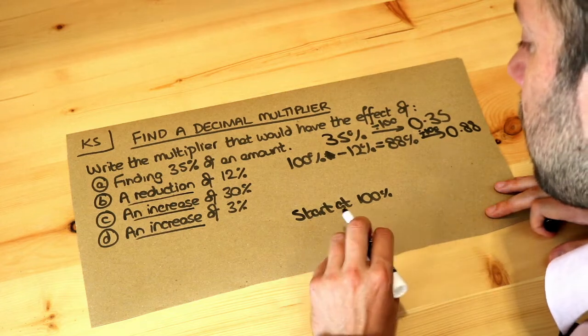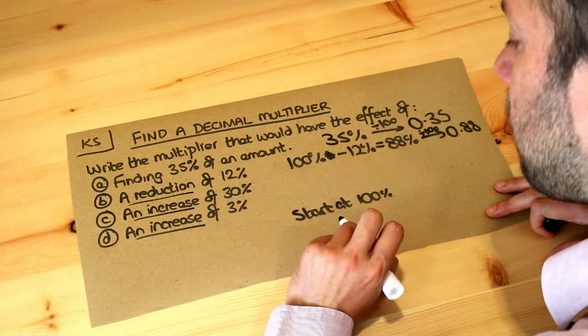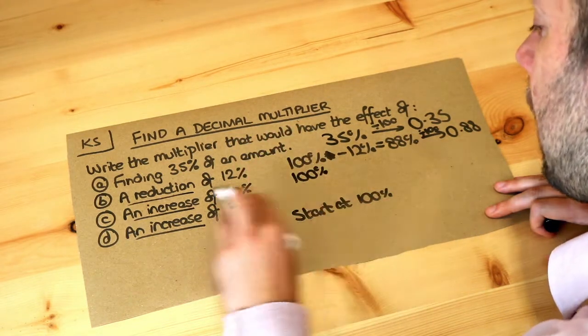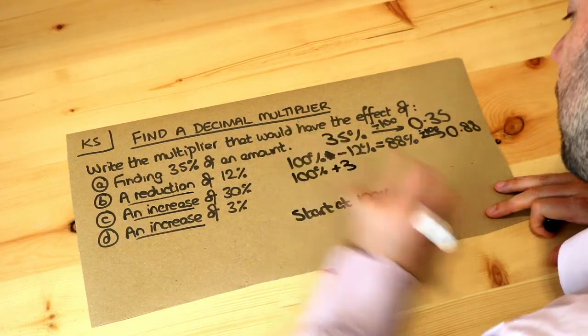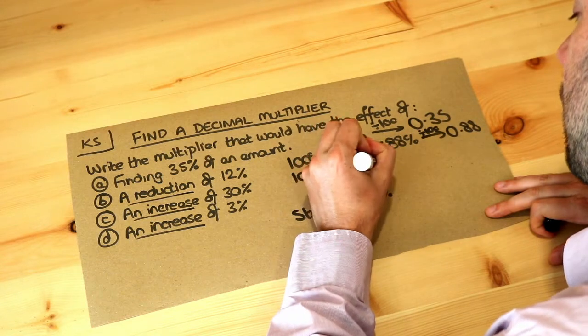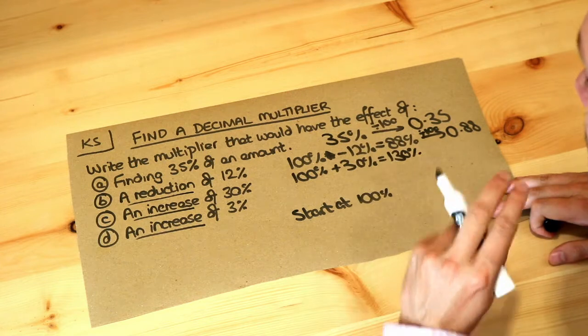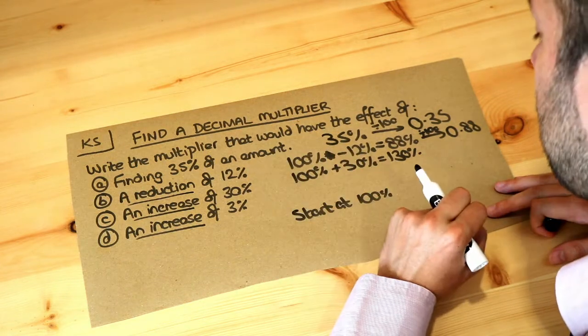Well the next one. How do we represent an increase of 30%? We start at 100%, and if it increases by 30%, then it's 130%. So therefore we want to find 130% of the value of this number.